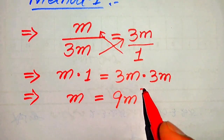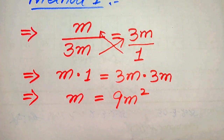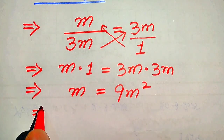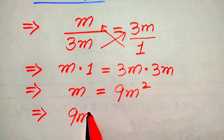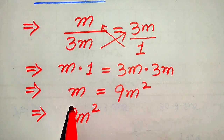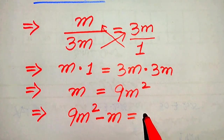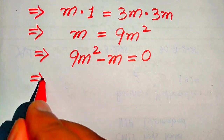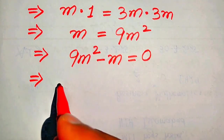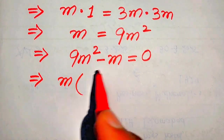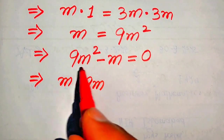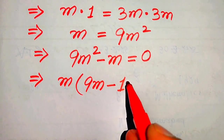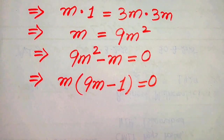Because we are solving for all values of m, we need to move m to the right hand side. When we move this m to the right hand side, we get nine m squared minus m equals zero. Both terms involve m, so we take m as a common factor. After factoring out m, we get m times (nine m minus one) equals zero.